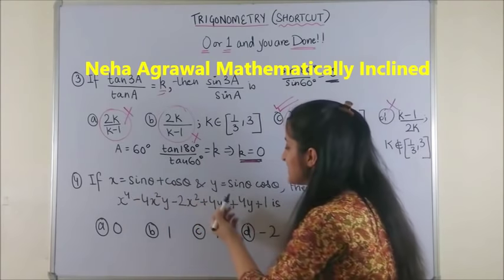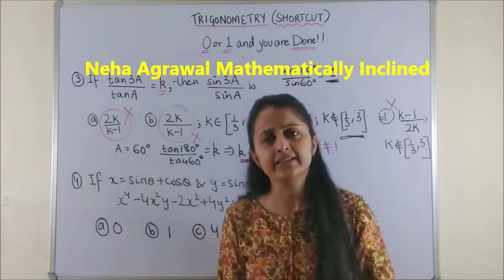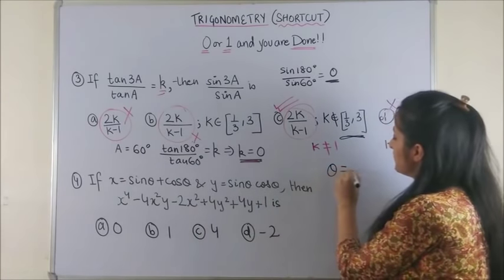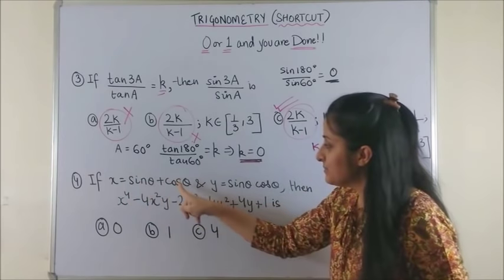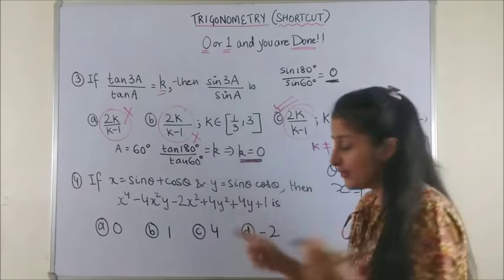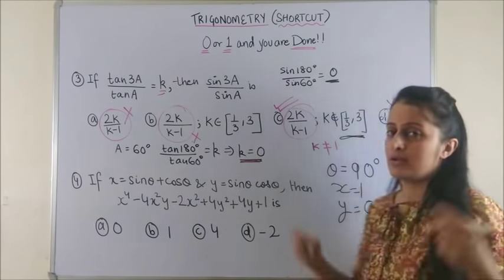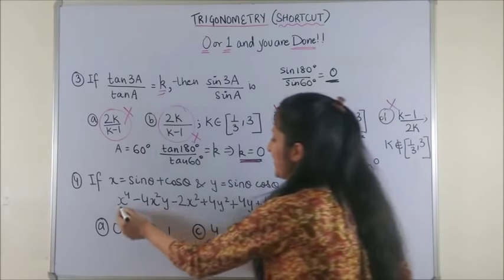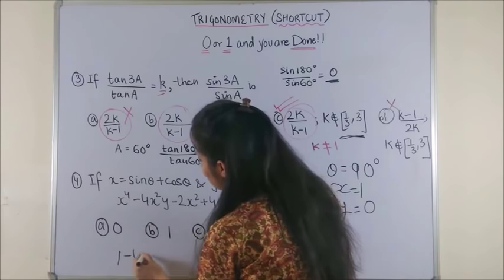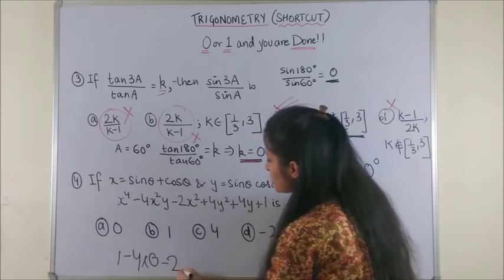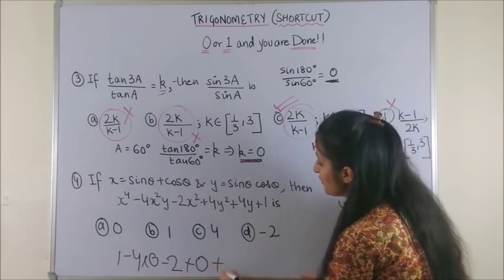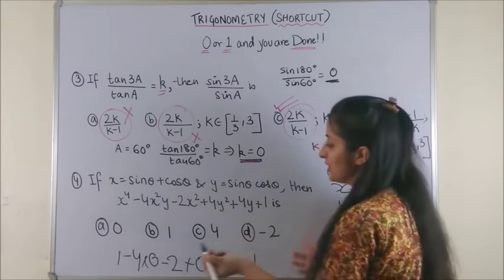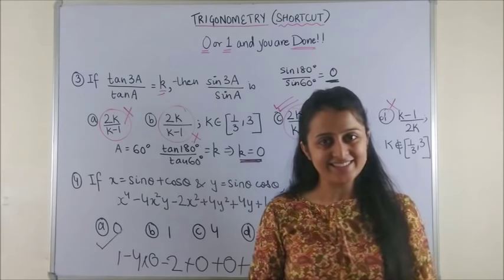Now, look at the fourth question. Since x and y are in terms of sin theta and cos theta, I can take anything. Theta to be 0 or 90. Let's take 90 because that reduces our work. So, if I take theta to be 90 degrees here, I get sin 90 plus cos 90. Definitely my x is a 1 and y simply becomes sin 90 into cos 90, so a 0. Wow. Now, all I need to do is substitute for x and y in this huge expression and that gives me an answer. So, x is a 1 minus 4 into y that becomes a 0 minus 2x square which is minus 2 plus 4y square which will be a 0 plus 4y which is a 0 plus 1. So, if you start simplifying your 1 plus 1 minus 2, it's a 0. That's your answer. Wasn't that easy?